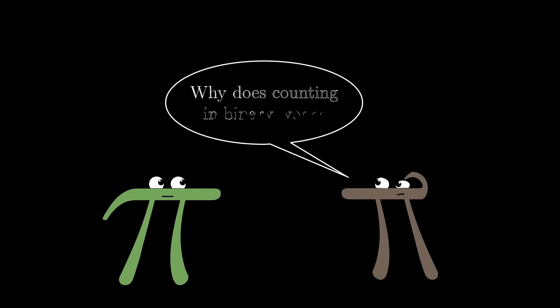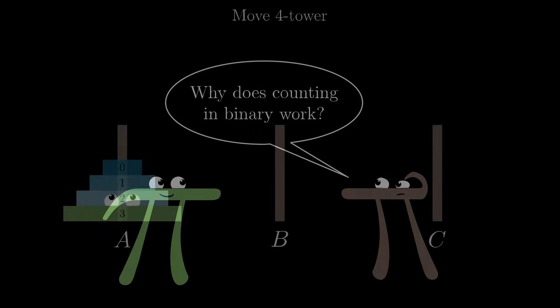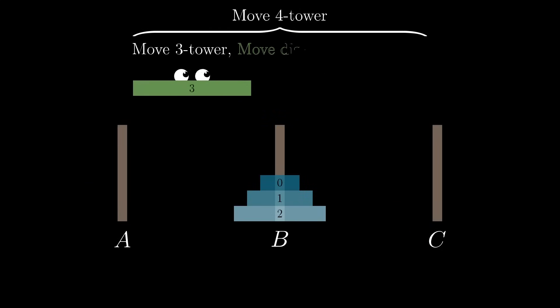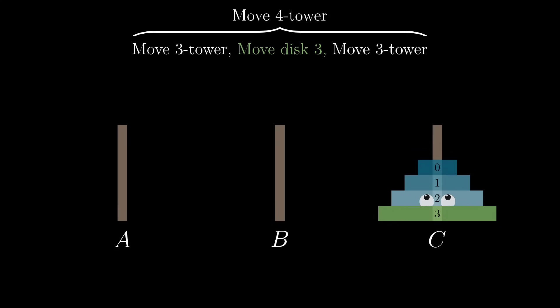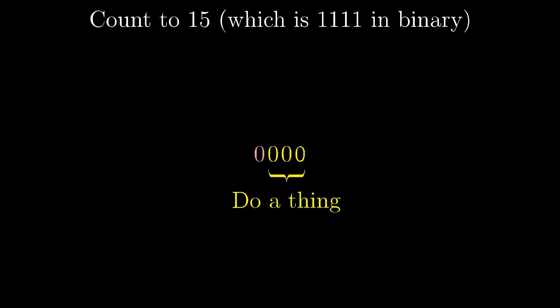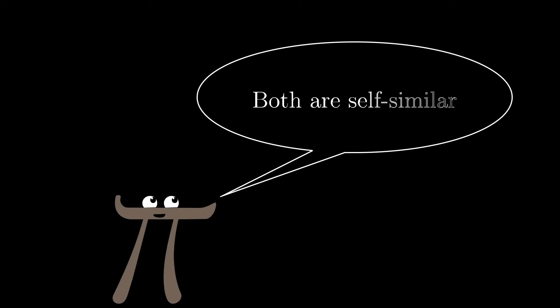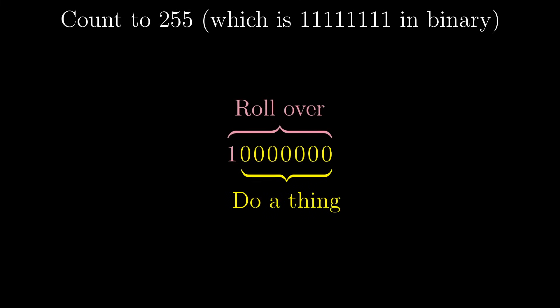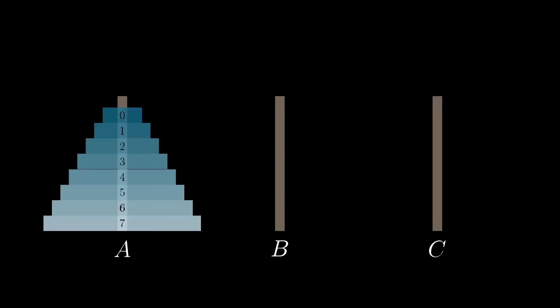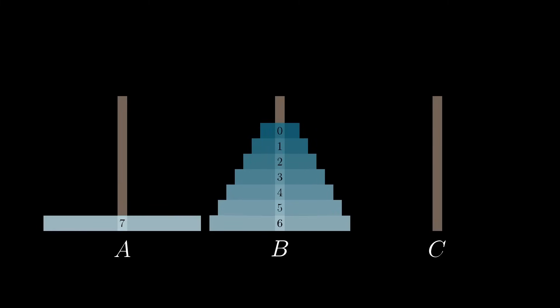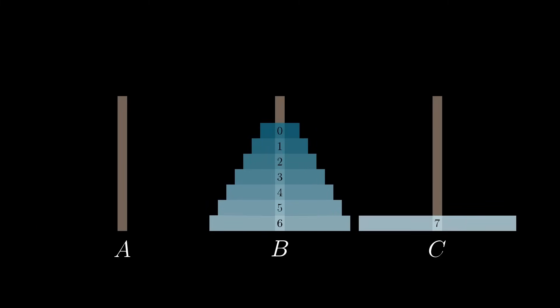So why does counting in binary capture this algorithm? Well, what's going on here is that this pattern of solving a subproblem, moving a big disk, then solving a subproblem again, is perfectly paralleled by the pattern of binary counting. Count up some amount, roll over, count up to that same amount again. And this Towers of Hanoi algorithm and binary counting are both self-similar processes, in the sense that if you zoom out and count up to a larger power of 2, or solve Towers of Hanoi with more disks, they both still have that same structure. Subproblem, do a thing, subproblem.